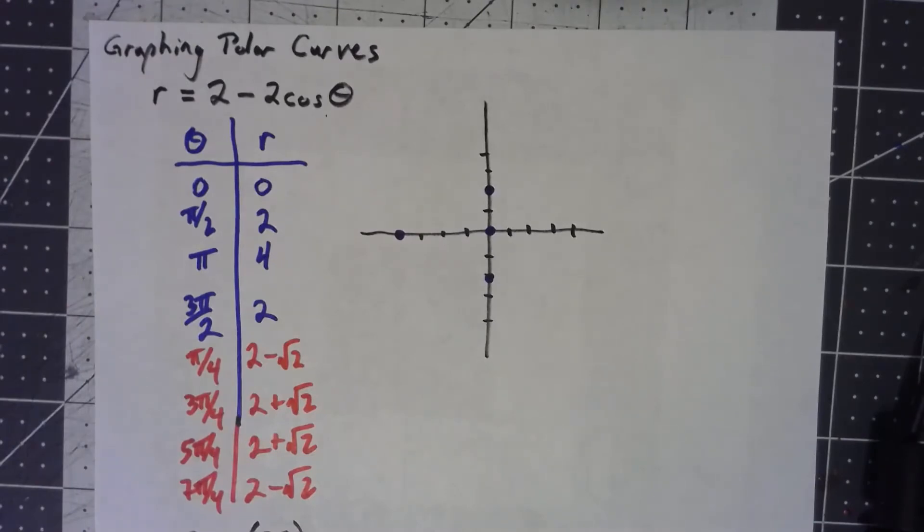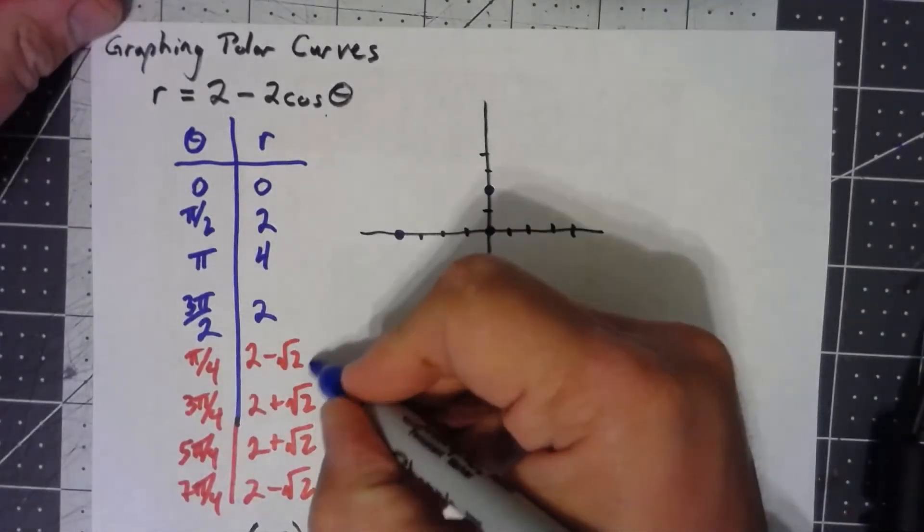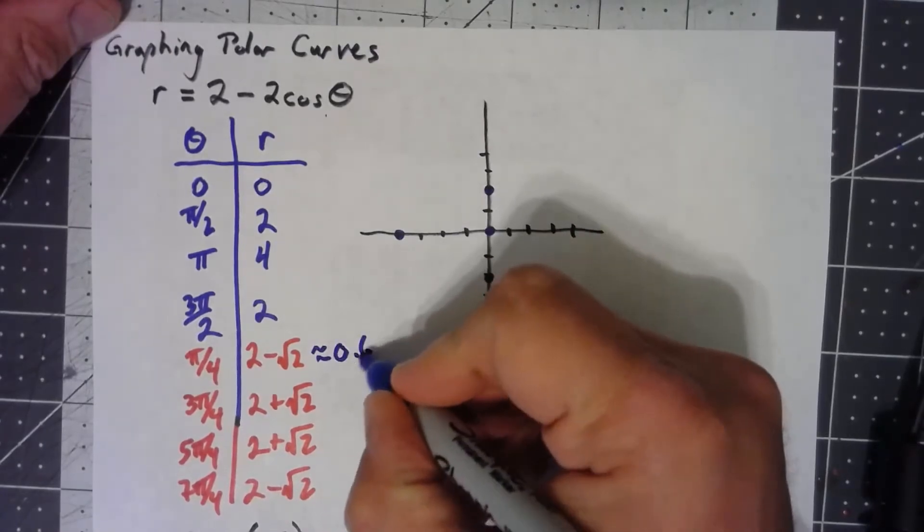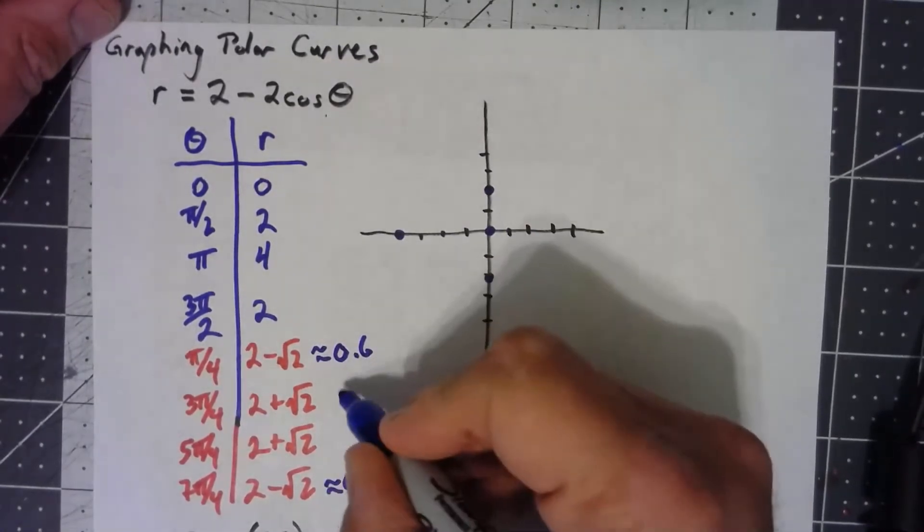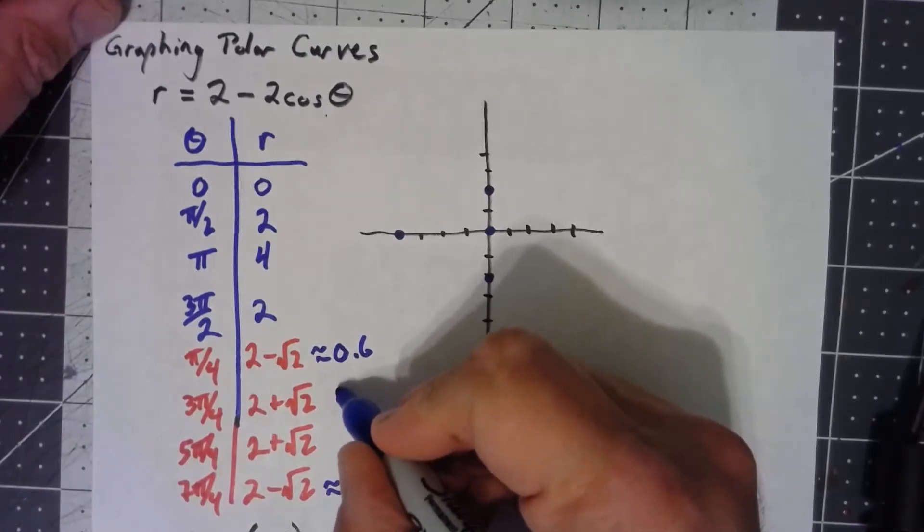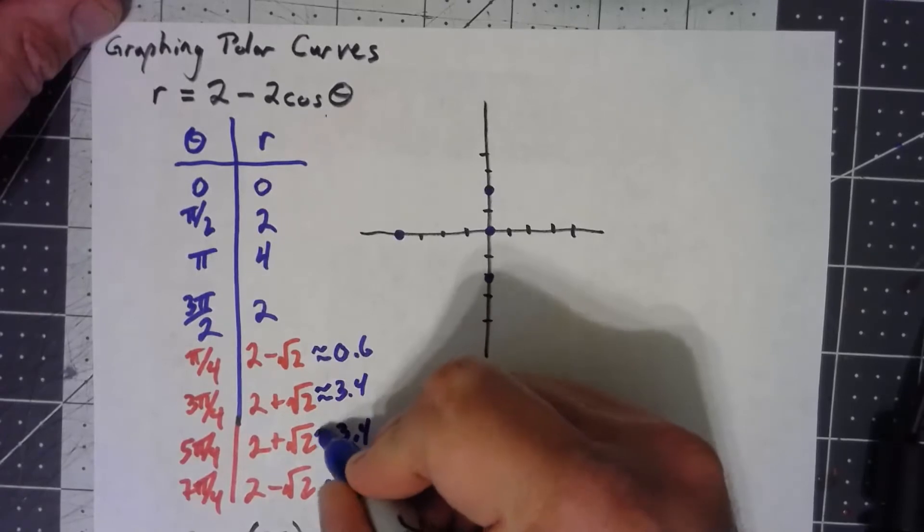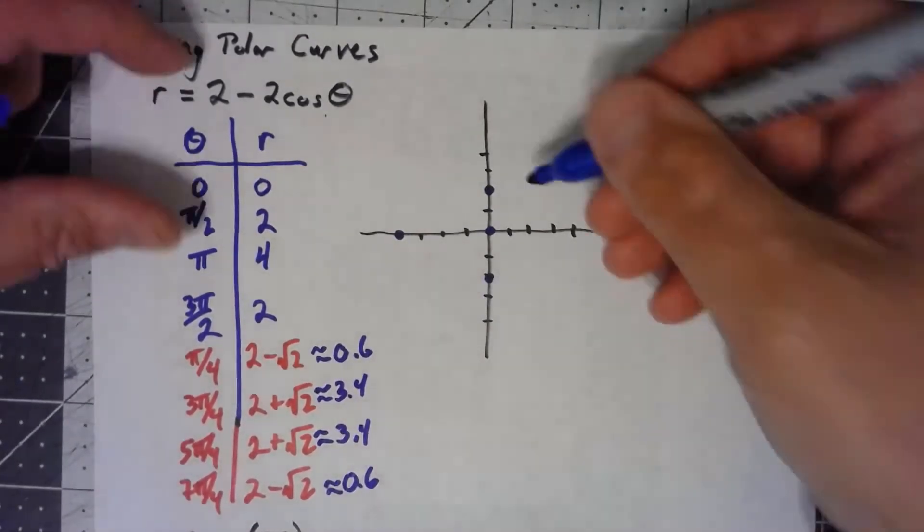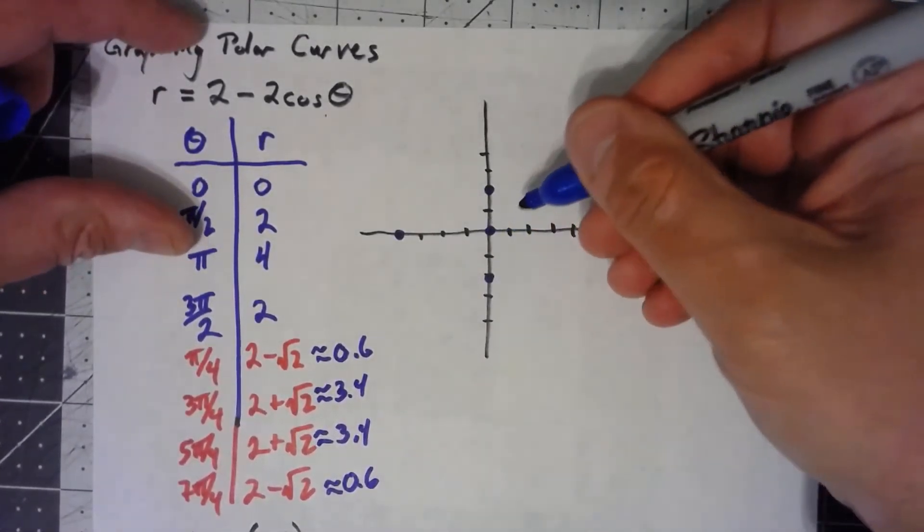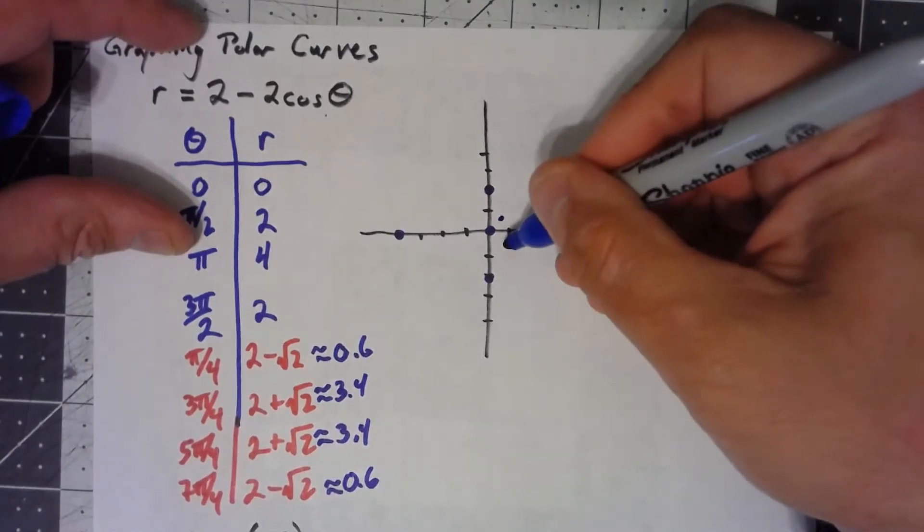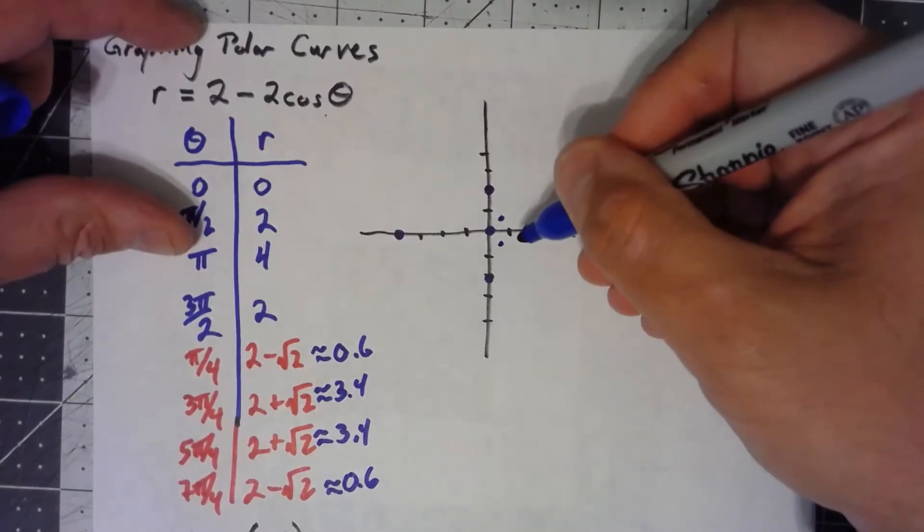I'm just doing a really quick thing, because I don't have a really accurate graph here anyway. 2 minus root 2, if we say root 2 is about 1.4, so this will be about 0.6, and this will be about 3.4. So at an angle of pi over 4, we're only going out 0.6. So we're somewhere around there. 7 pi over 4, we're somewhere around there.